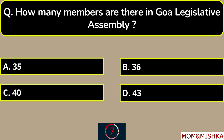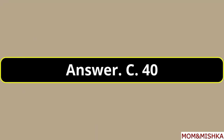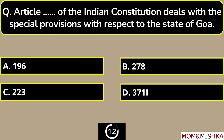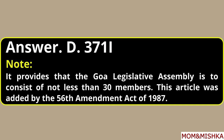How many members are there in the Goa Legislative Assembly? 40 members, option C. Article blank of the Indian Constitution deals with the special provisions with respect to the state of Goa — it's Article 371I, option D, which provides that the Goa Legislative Assembly is to consist of not less than 30 members, and it was added by the 56th Amendment Act of 1987.